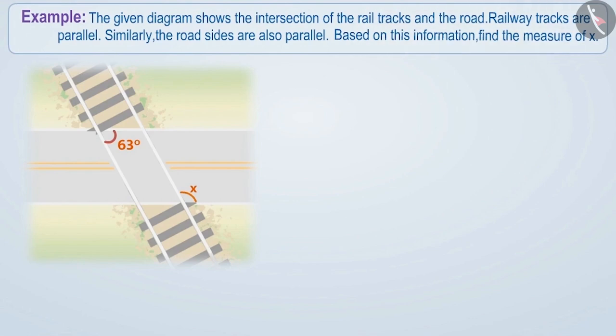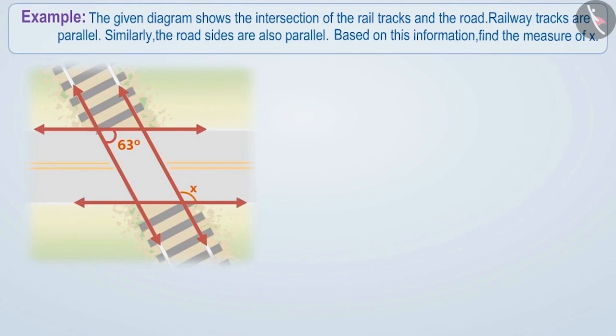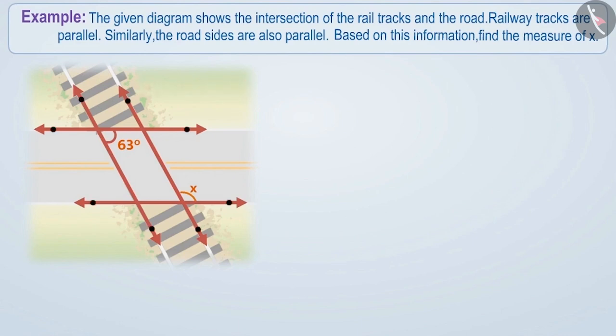This question may seem to be difficult but it is a very interesting question. Let's solve it. Here we can assume that the railway tracks and the roadsides go infinitely without meeting, so we can represent them as parallel lines. To solve this question, let's name them after taking some points on the lines.